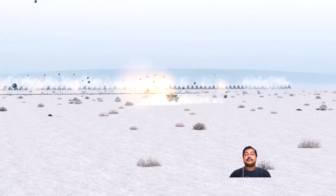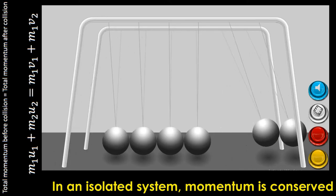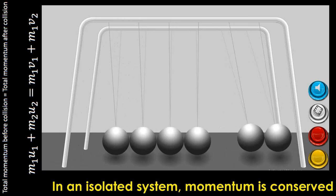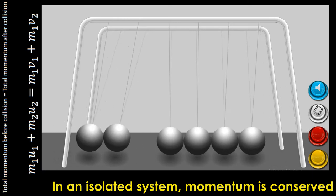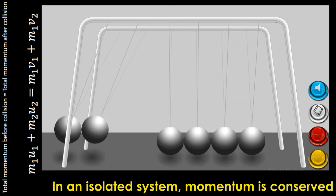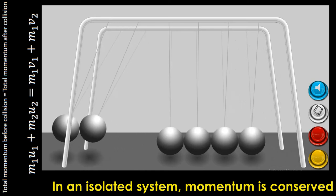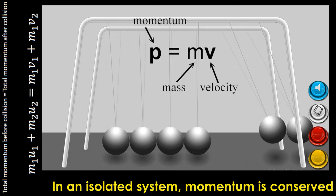Most of the collisions in daily life are inelastic in nature. What is momentum? Momentum is a property of objects with mass and velocity. It is a vector quantity with the same direction as the velocity of the object.